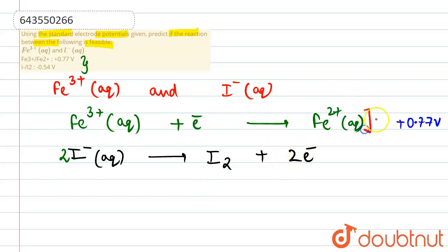We have to multiply the first reaction with two also so that the electron exchanges are balanced. E naught for the second reaction is minus 0.54 volts. We can see in the first reaction reduction is happening. This is for the cathode, and the second oxidation, this reaction is for the anode.